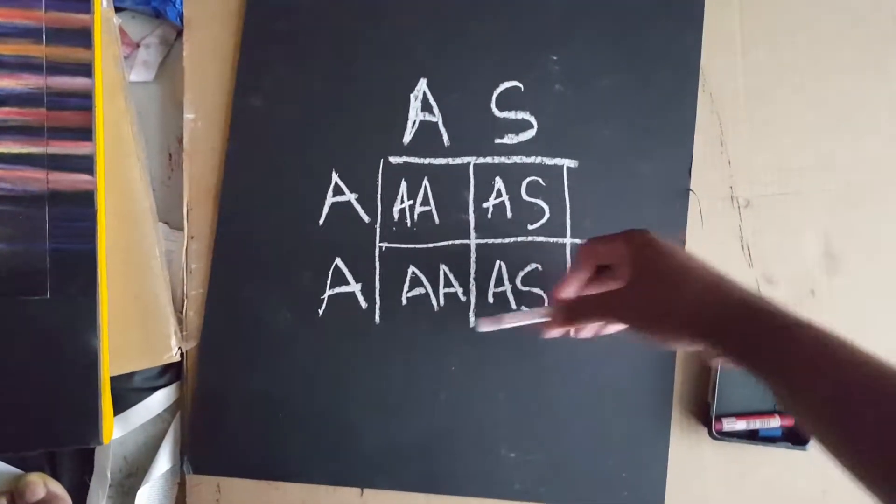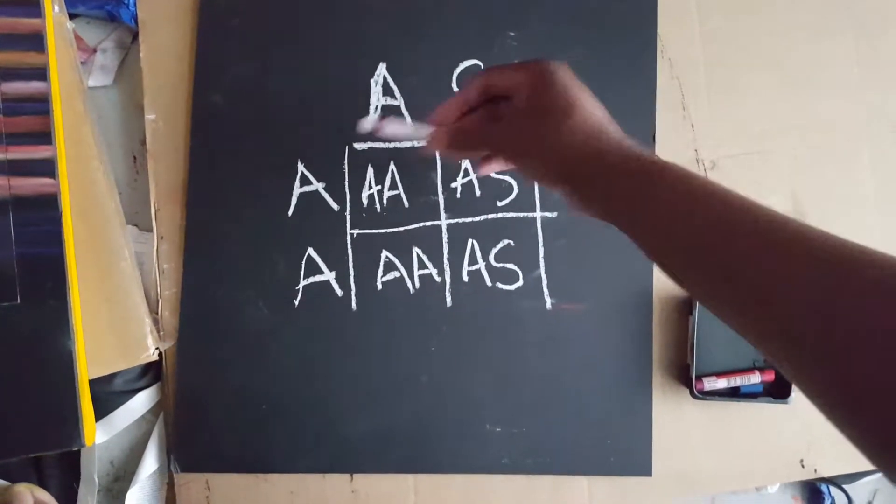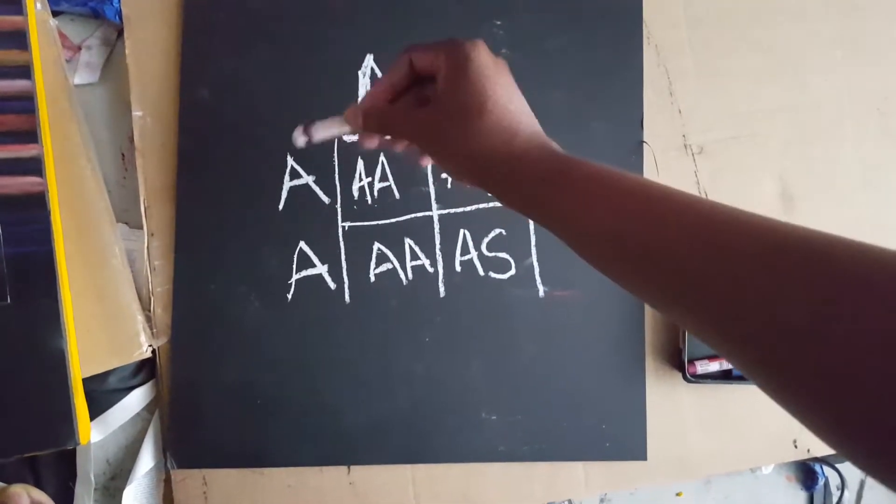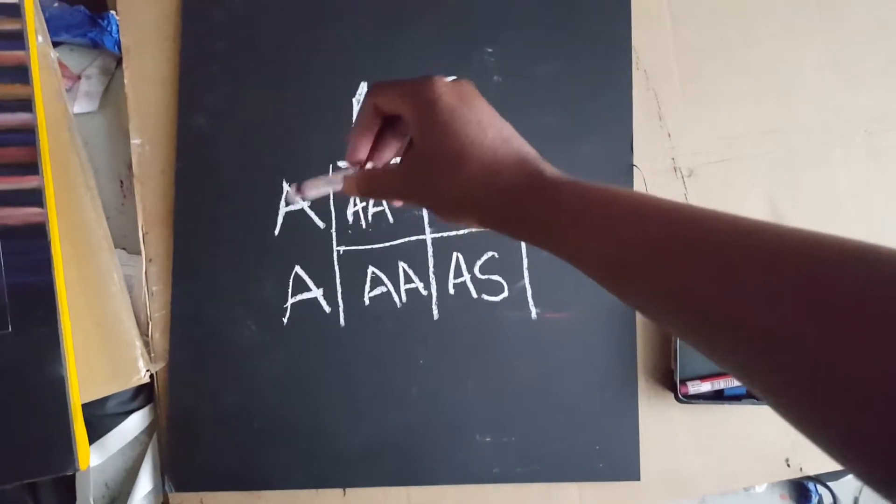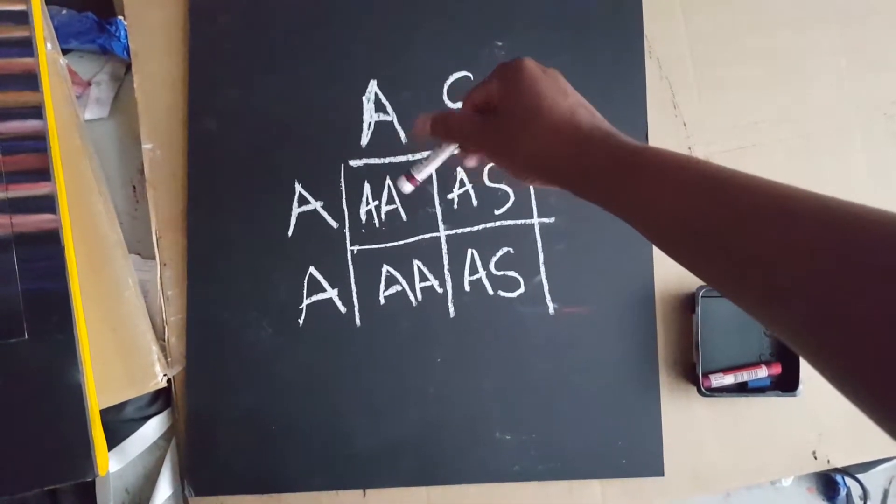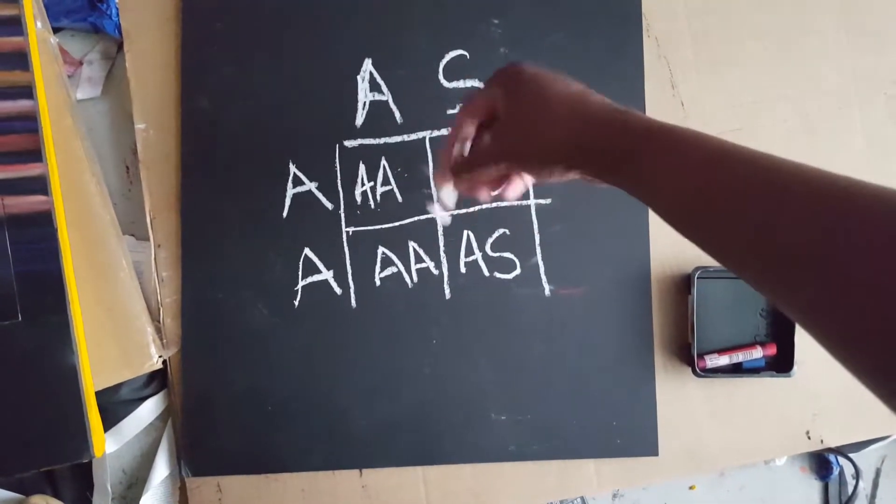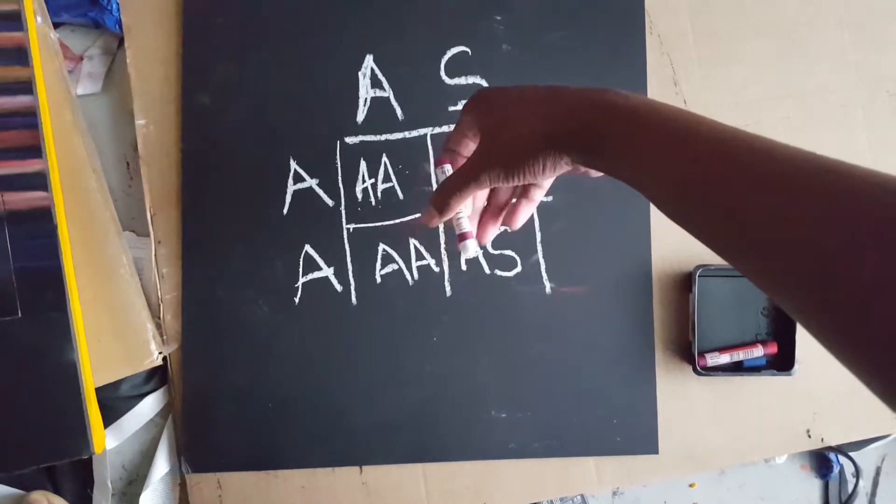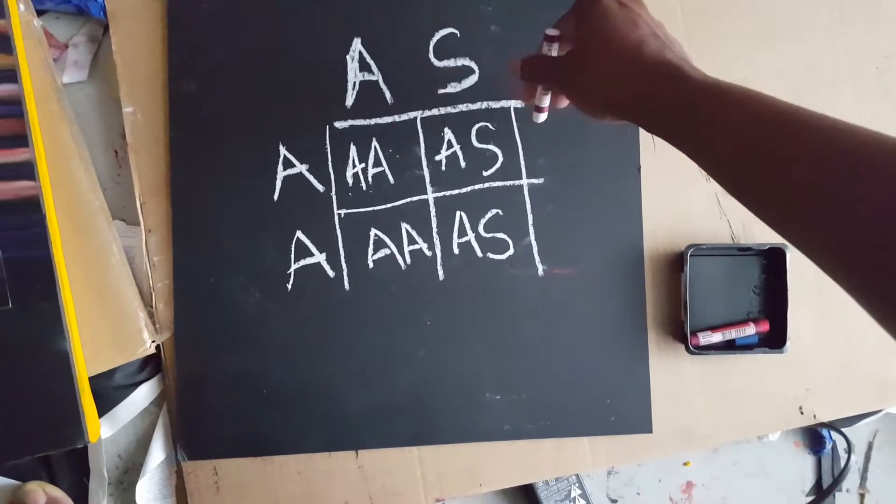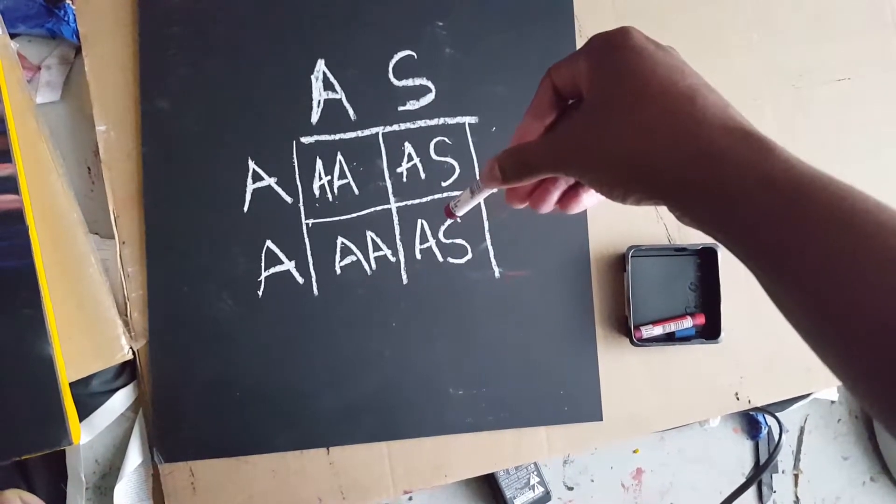So when you do this Punnett square for genetics with two adults, two parents that have one having normal hemoglobin, the other one having the trait in the hemoglobin, you have 50% chance of having a child with normal hemoglobin type and 50% chance of having a child that has the trait.